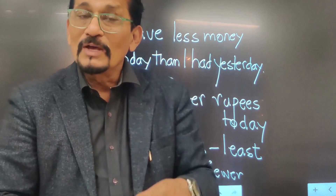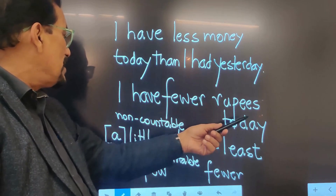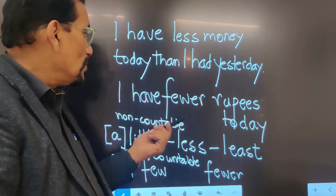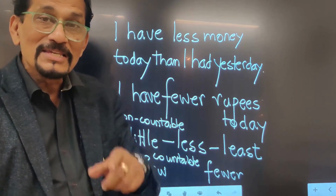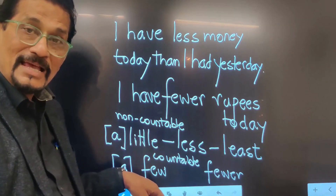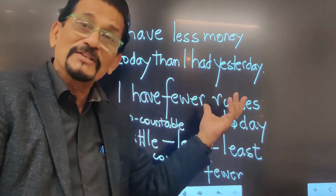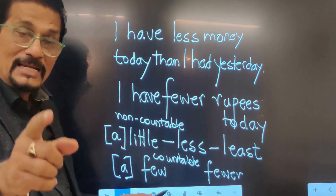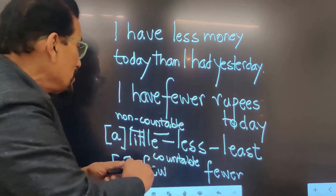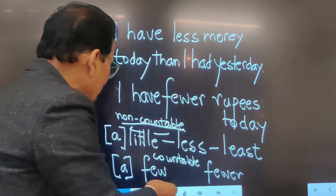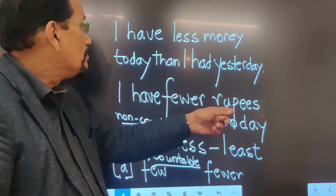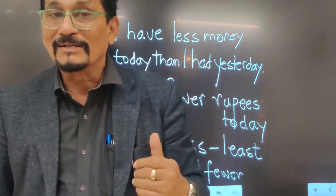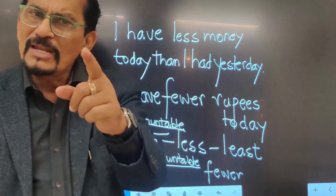Next sentence: 'I have fewer rupees today.' Here, 'few' is the base adjective, and 'fewer' is the comparative — so the adjective itself is already comparative. One very important distinction: 'little' is used for non-countables, and 'few' is used for countables. So 'rupees' is countable, but 'money' is a collective noun — uncountable. Therefore I use 'less' with money and 'fewer' with rupees. For example: 'I have little milk' and 'I have few eggs.'